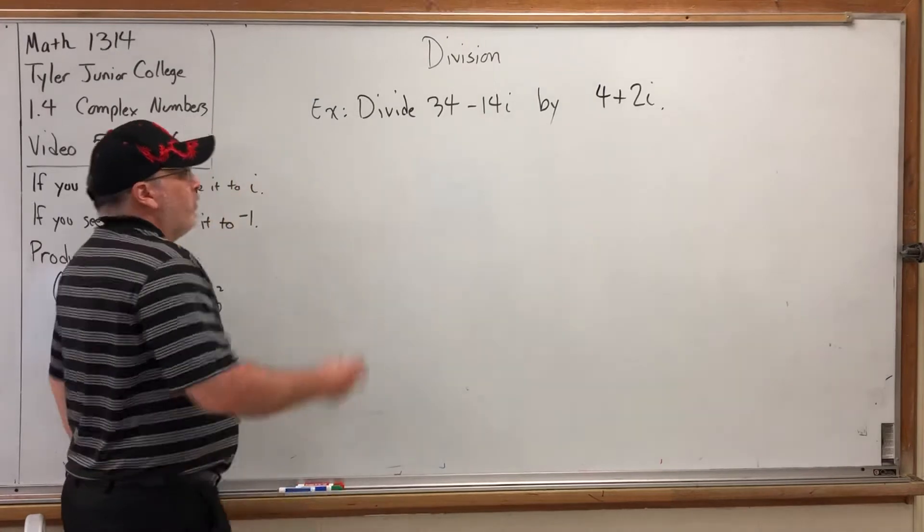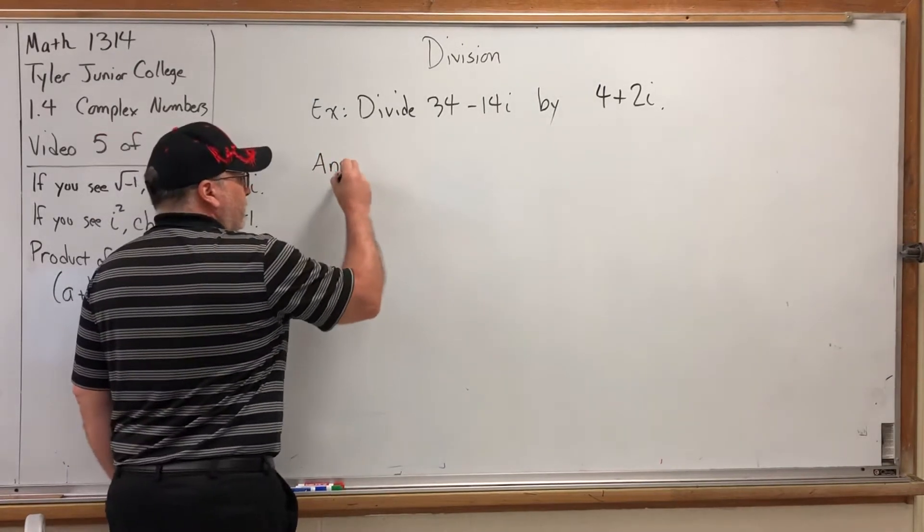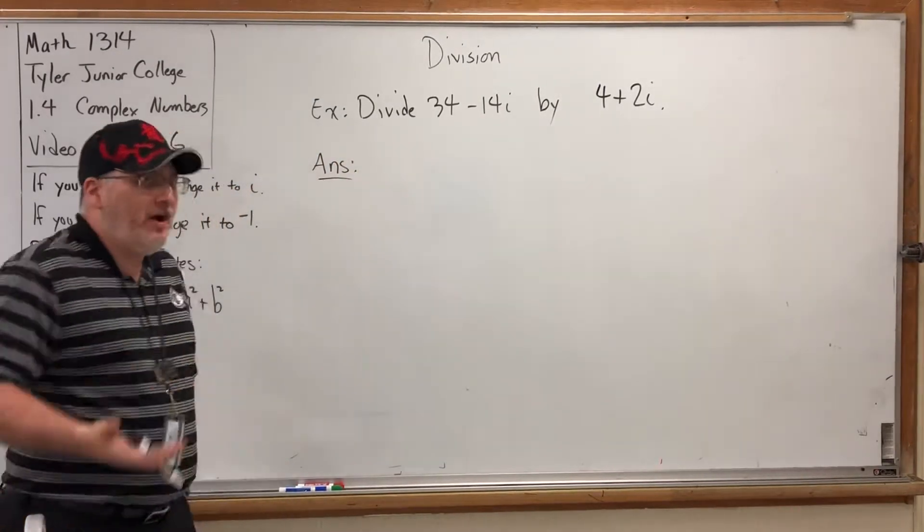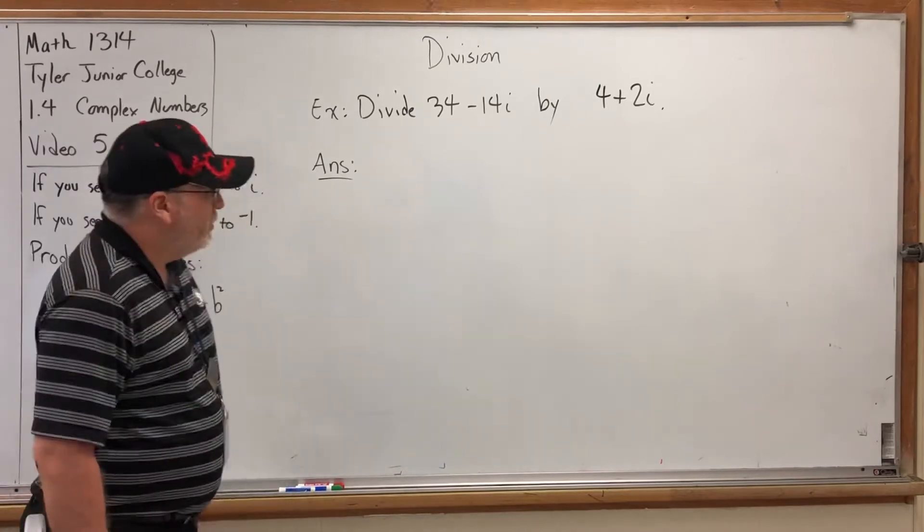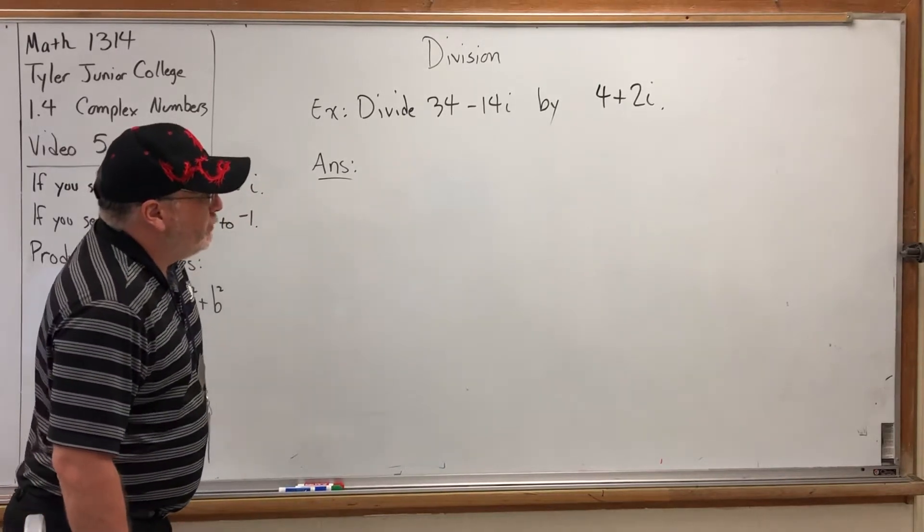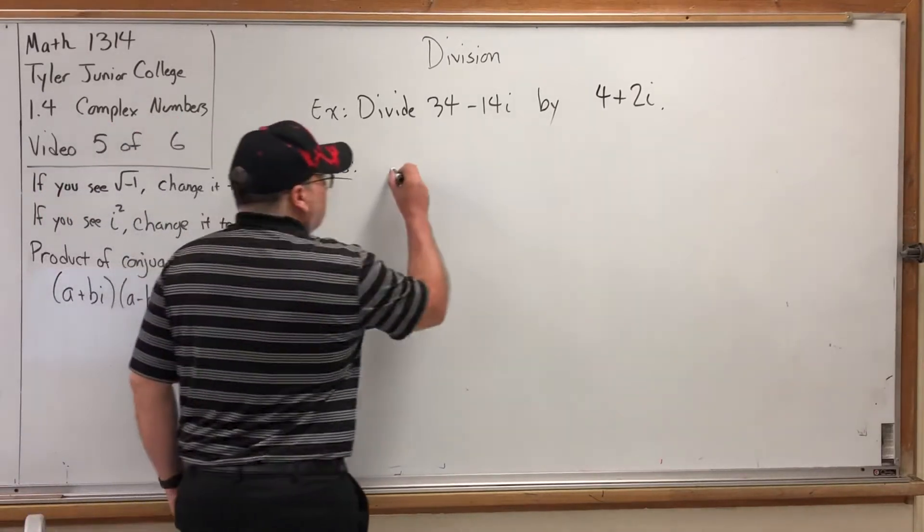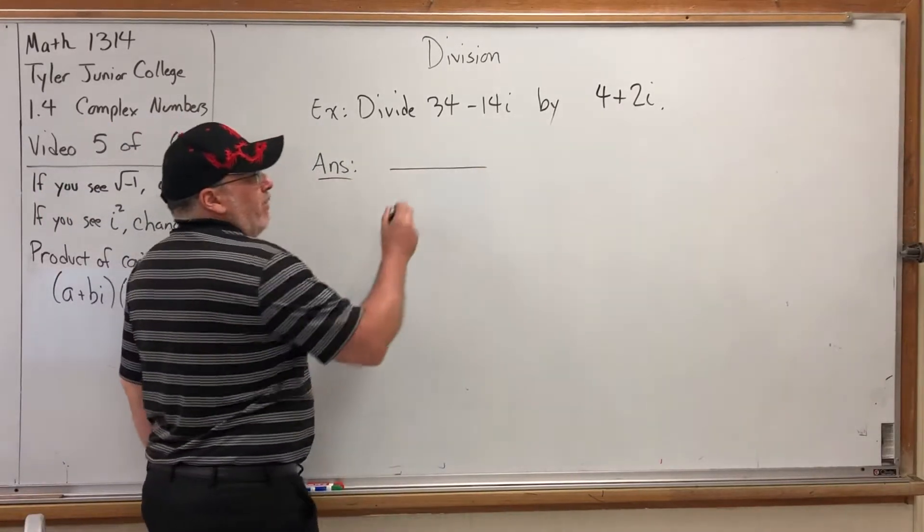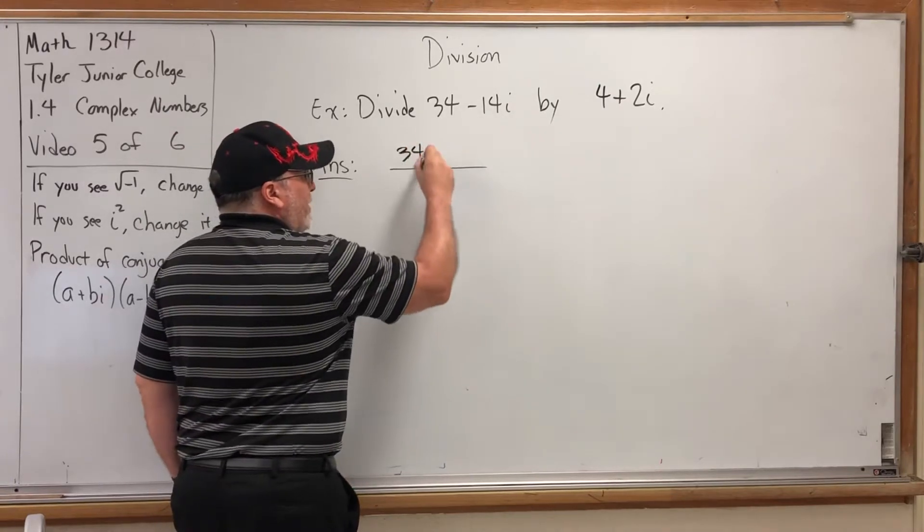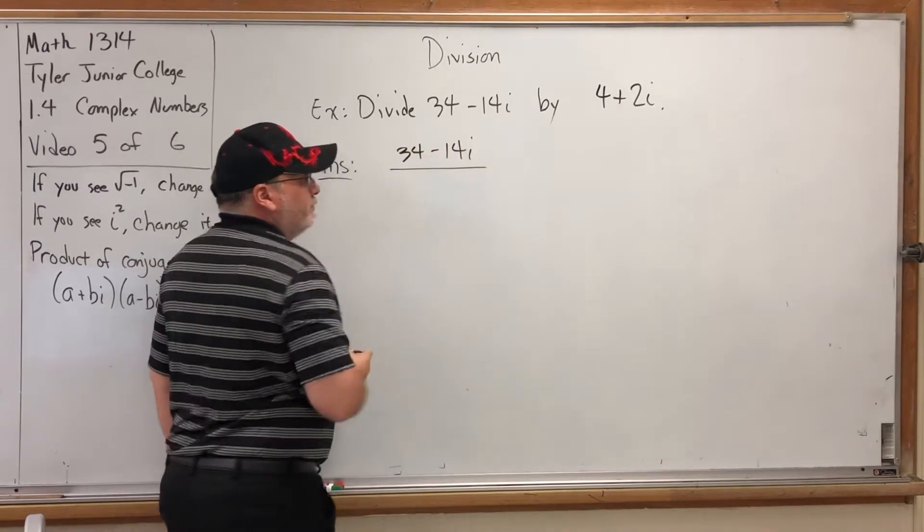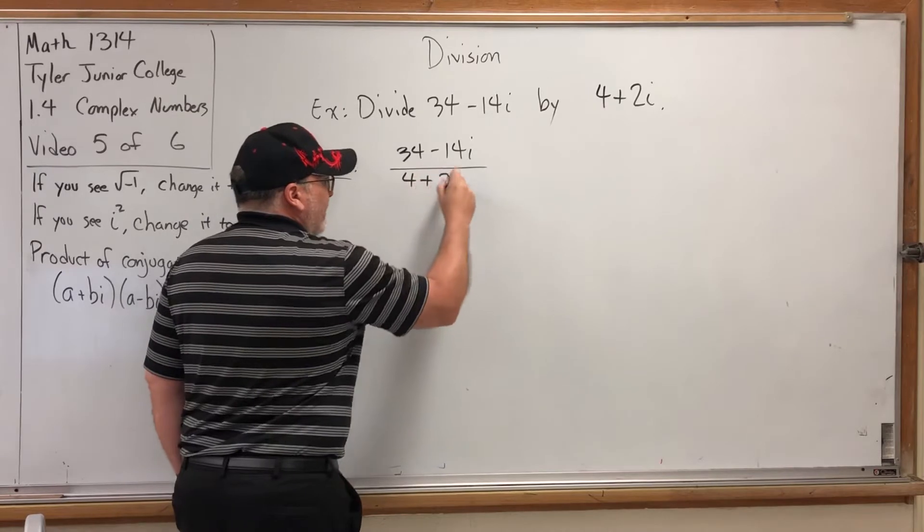So how do you approach division? Well, in a nutshell, any division problem is a fraction and vice versa. So in an uncharacteristic move I'm going to make something into a fraction that is not given to us as a fraction. I can write this division problem by putting 34 - 14i in the numerator and 4 + 2i in the denominator.